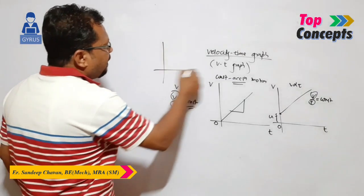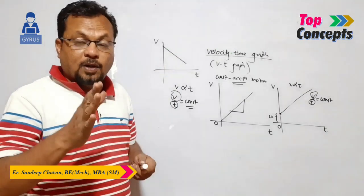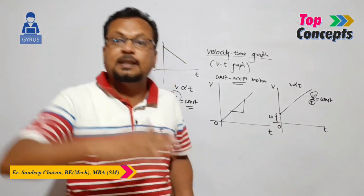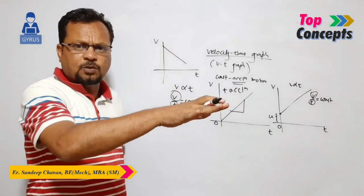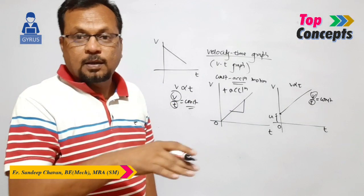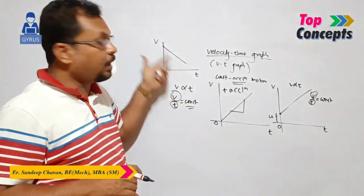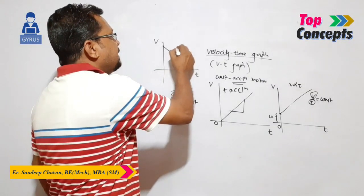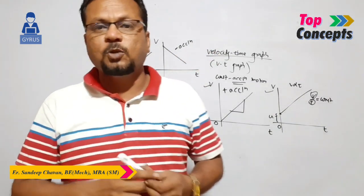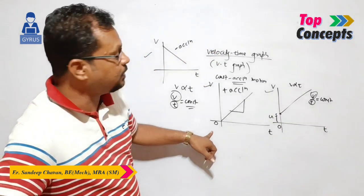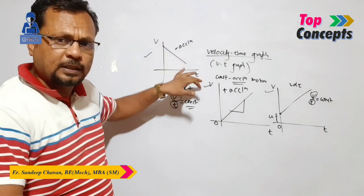In both cases, the velocity is decreasing. These are cases of negative acceleration. The velocity is changing with respect to time at a constant proportion, so acceleration is constant, but the graph is coming downward — in the downward direction. The slope of the graph is negative, hence the acceleration here is negative. So for a straight line going downward, this is constant acceleration motion but with negative acceleration.